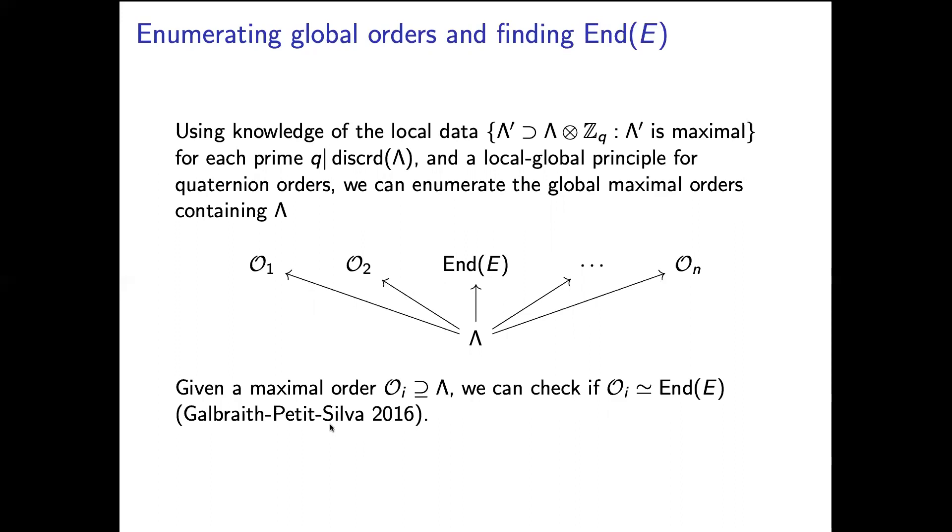And at each step checking whether the order is isomorphic to the endomorphism ring of E. One can do this with an algorithm essentially due to Galbraith, Petit, and Silva in 2016. They show that if you have a maximal order in this quaternion algebra ramified at p and infinity, you can efficiently compute a curve whose endomorphism ring is isomorphic to that maximal order. So that means we can actually check which of these are correct.